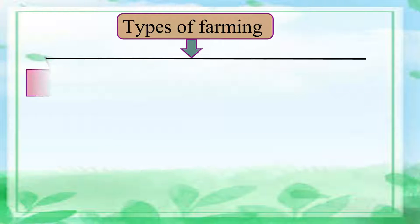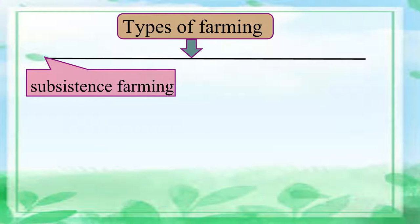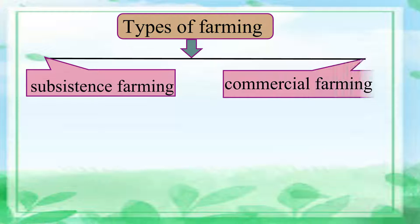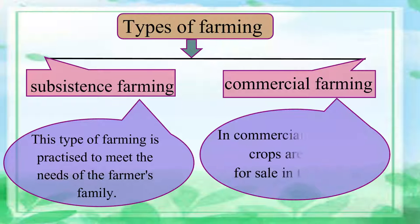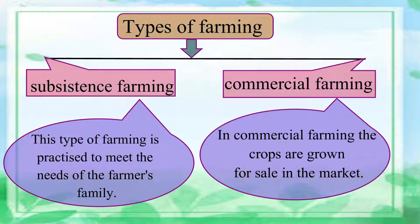The main types of farming are subsistence farming and commercial farming. Subsistence farming is the type of farming which is practiced to meet the needs of the farmer's family. Commercial farming is the farming in which the crops are grown for sale in the market.